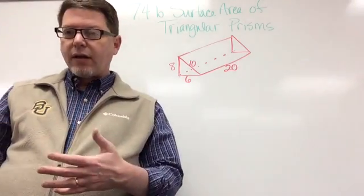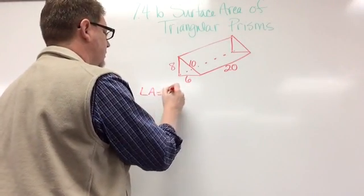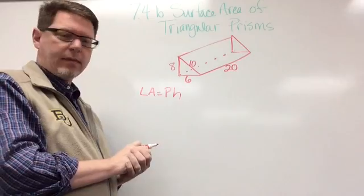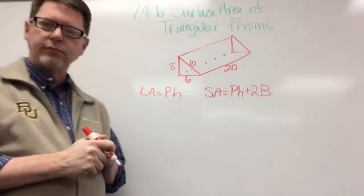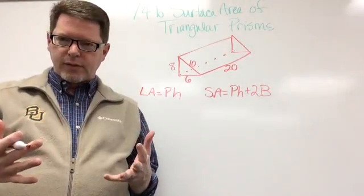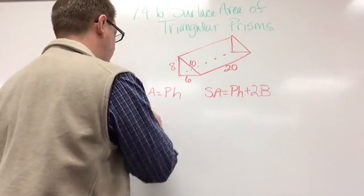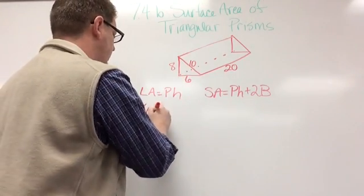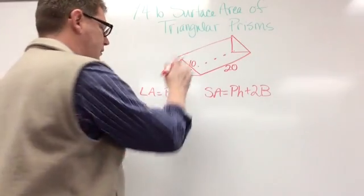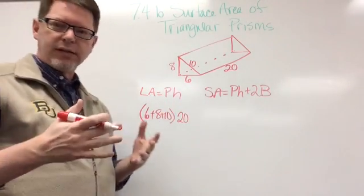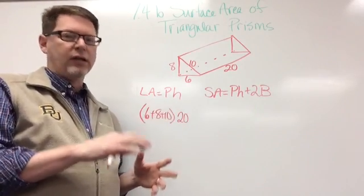We need to find the lateral area and the surface area for this triangular prism. Lateral area is capital PH, and surface area is capital PH plus 2B. Capital P stands for perimeter of the base, so I look at my triangle: the sides are 6, 8, and 10. The height of the prism is 20. So 6 plus 8 is 14, plus 10 is 24, and 24 times 20 is 480. The lateral area is 480.